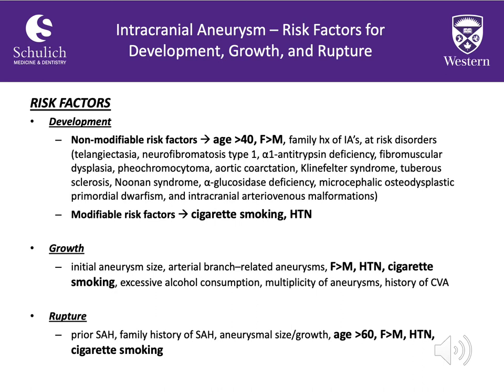Alcohol places a patient at increased risk for aneurysm growth, as does a prior history of cerebrovascular events including TIA or stroke. The group of greatest concern is those at risk of rupture. Common features across all risk factor groups—development, growth, and rupture—include increasing age, female gender, hypertension, and cigarette smoking. Additionally, prior subarachnoid hemorrhage, family history of subarachnoid hemorrhage, and the initial aneurysm size and growth rate also place individuals at future rupture risk.